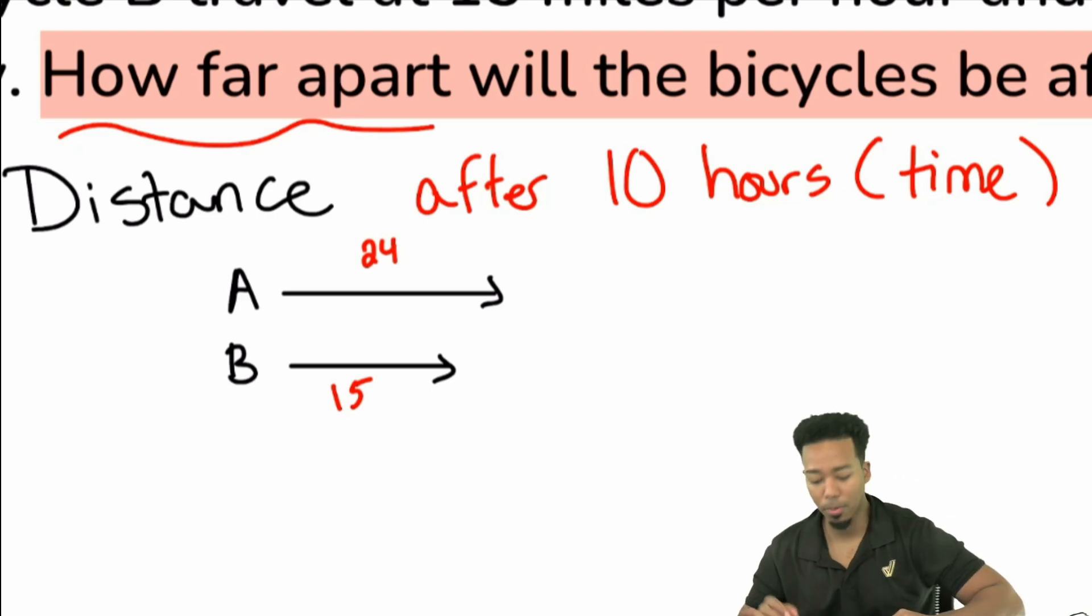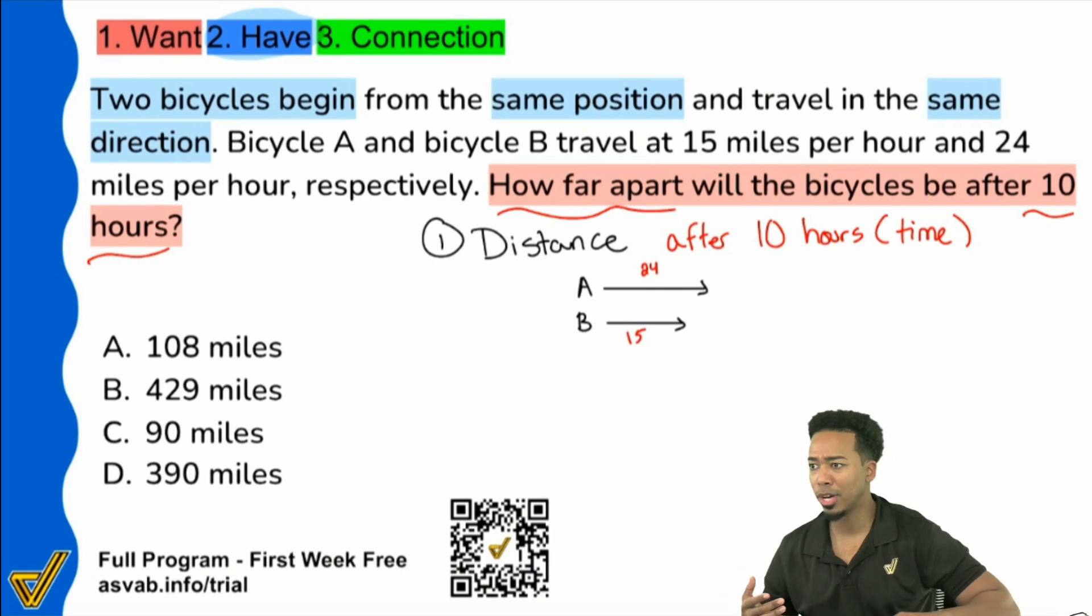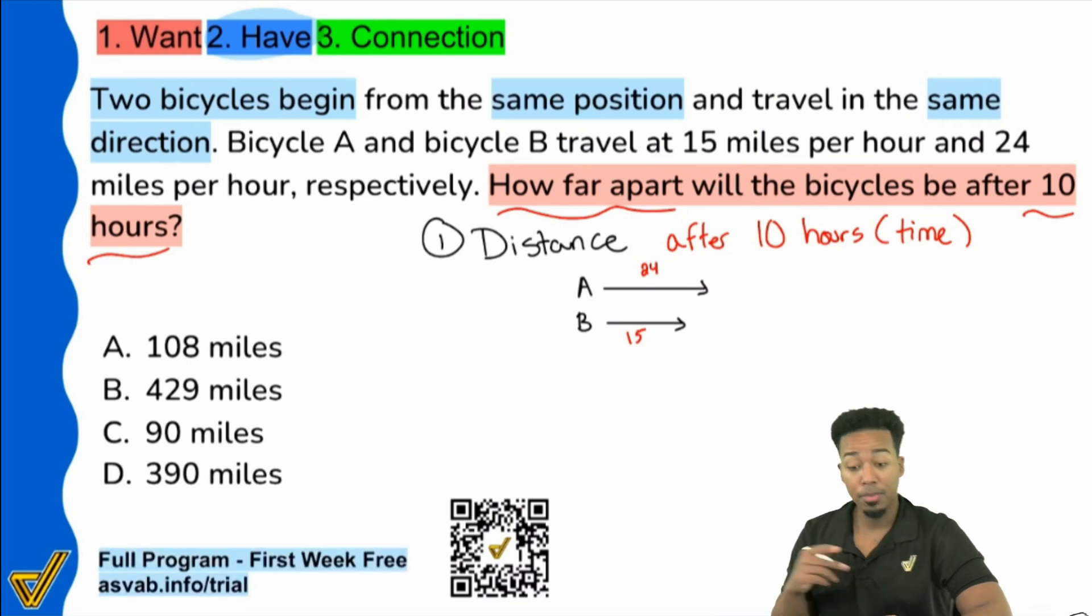So if you want to learn more about how to really understand if they're going in the same direction, opposite directions, if you even need to do anything with the rates at all, I really do suggest this right here, my full program, the first week is free. So you can scan that QR code or go to that link right there. You get a full week for free. That way I can show you exactly how to raise your score and there's no credit card required. We know that we're the best in the nation and we're going to prove it to you.